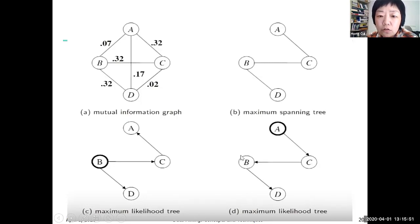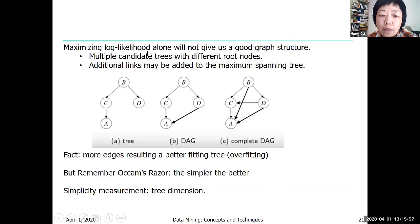So now we have lots of candidate trees that maximize the scores. We need to decide which one is the best, right? We might actually have all the nodes connected, but we could add additional arcs. Maybe when you're adding more arcs, the data are going to be fit better than those simpler graphs. However...